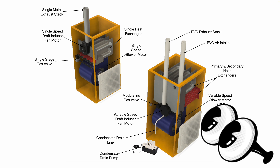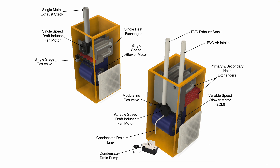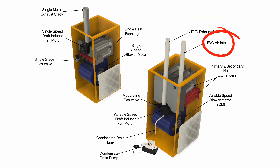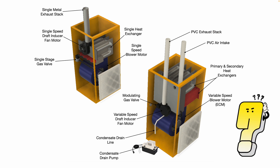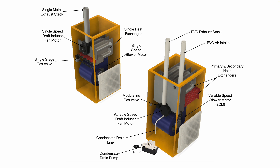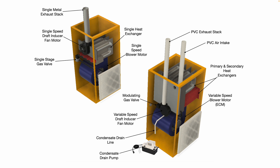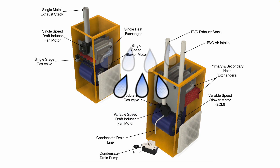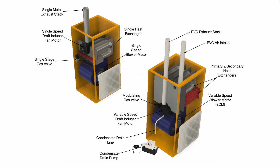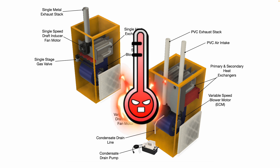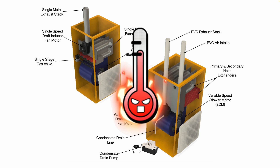Looking at the high efficiency furnace, you'll note we have a PVC exhaust stack and a PVC air intake. Why is that? Well, these newer high efficiency furnaces are so efficient during the combustion process — with dual heat exchangers — that the amount of heat left over in the exhaust gas is very minimal. There is some condensation as a byproduct, but the majority of the heat energy is being transferred into the airflow going into your house or building.